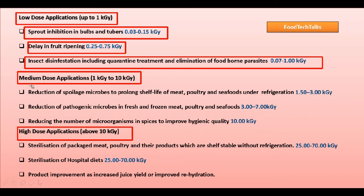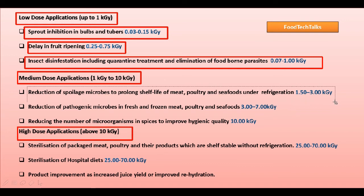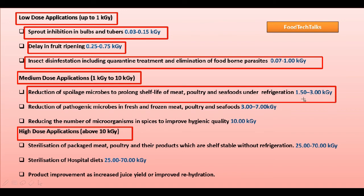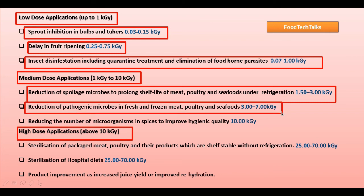Medium dose applications include: reduction of spoilage microbes to prolong shelf life of meat, poultry, and seafood under refrigeration at 1.5 to 3 kilogray; reduction of pathogenic microbes in fresh and frozen meat, poultry, and seafood at 3 to 7 kilogray; and reducing the number of microorganisms in spices to improve hygiene quality at up to 10 kilogray.